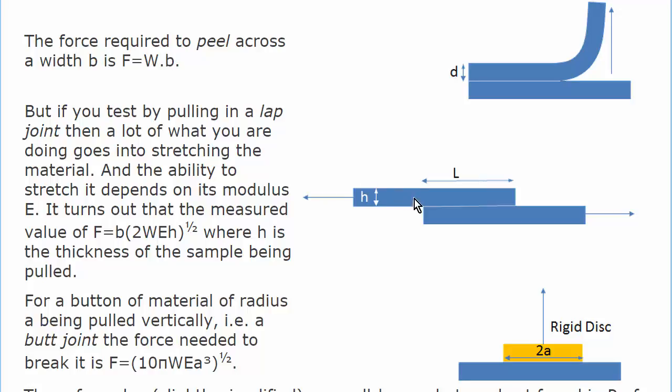If we do it as a lap joint, pulling it apart in shear, then the force needed depends on the width, of course. It depends on the work of adhesion, but it also depends on the modulus E and the thickness H. So already, although we have the same adhesive system, we've got extra parameters, modulus and thickness, that aren't relevant to the peel.